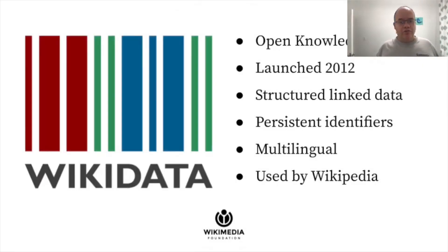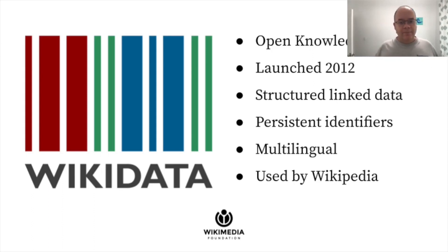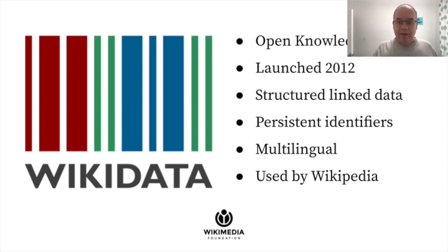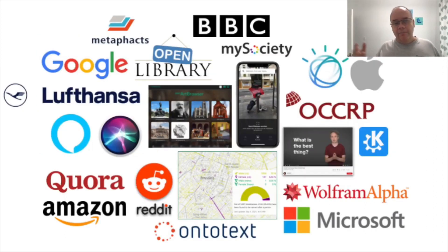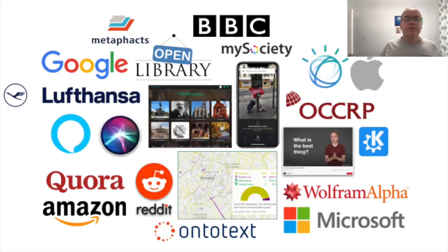Wikidata is an open knowledge graph that anyone can edit. It was launched in 2012, 11 years ago, and provides structured linked data and persistent identifiers for millions of topics of interest. Wikidata is entirely multilingual, and it is used extensively by Wikipedia and many other projects, companies, and developers such as Google, Apple, Microsoft, Lufthansa, the BBC, and many more — also, in particular, by research teams all around the world. Google Scholar lists more than 26,000 research papers built on top of Wikidata.